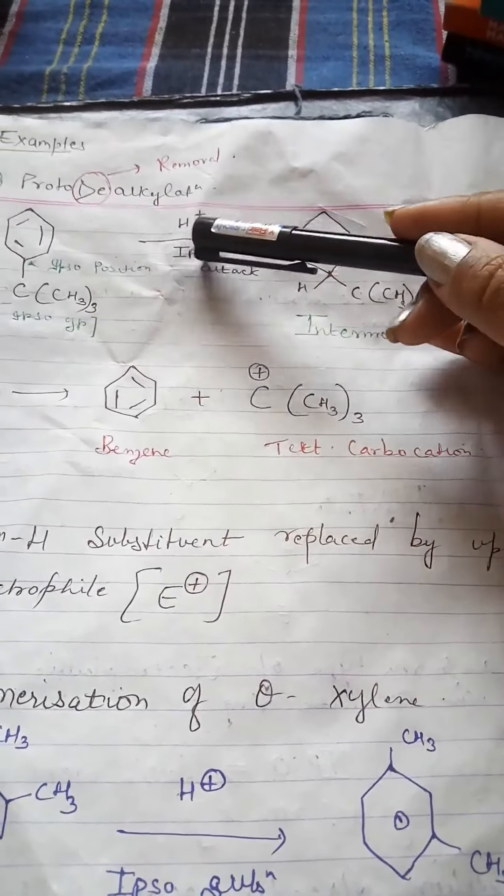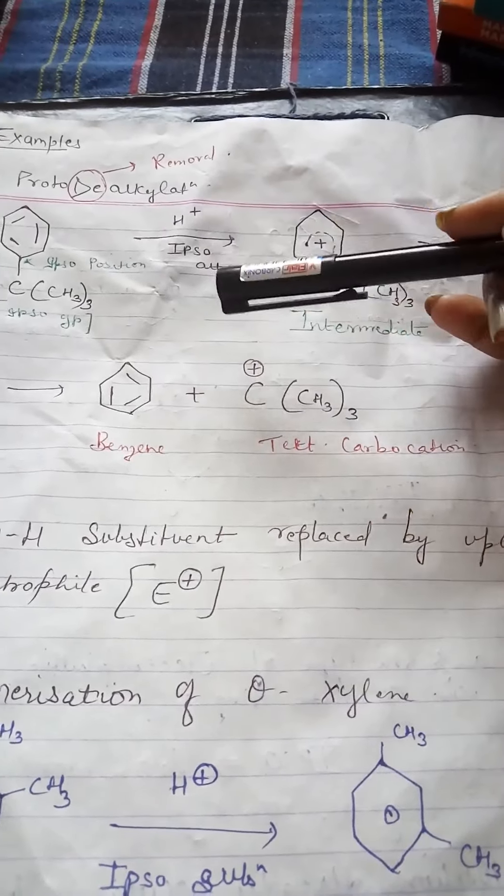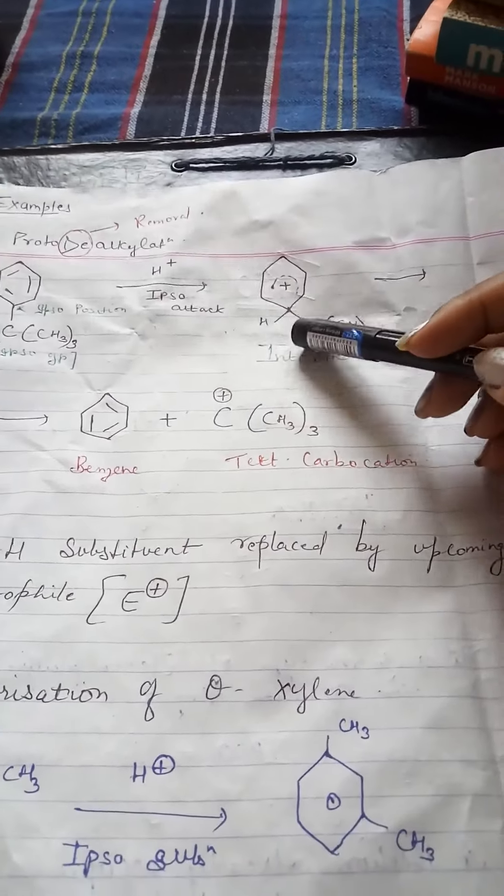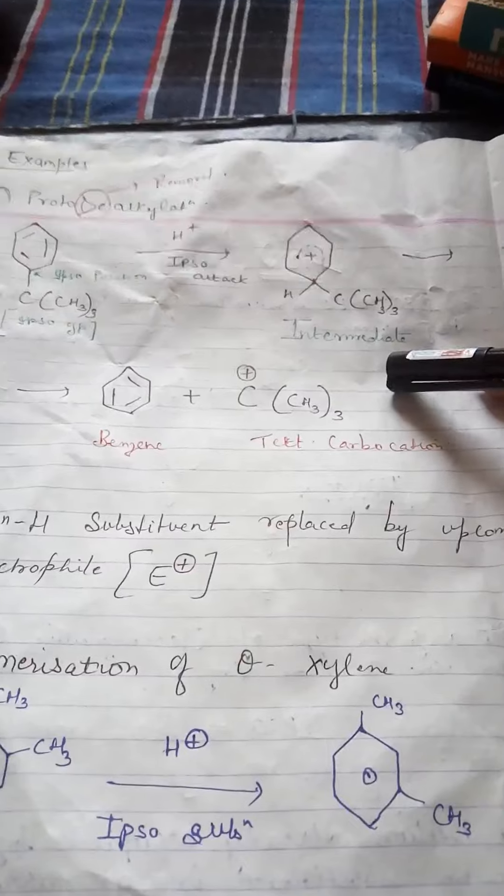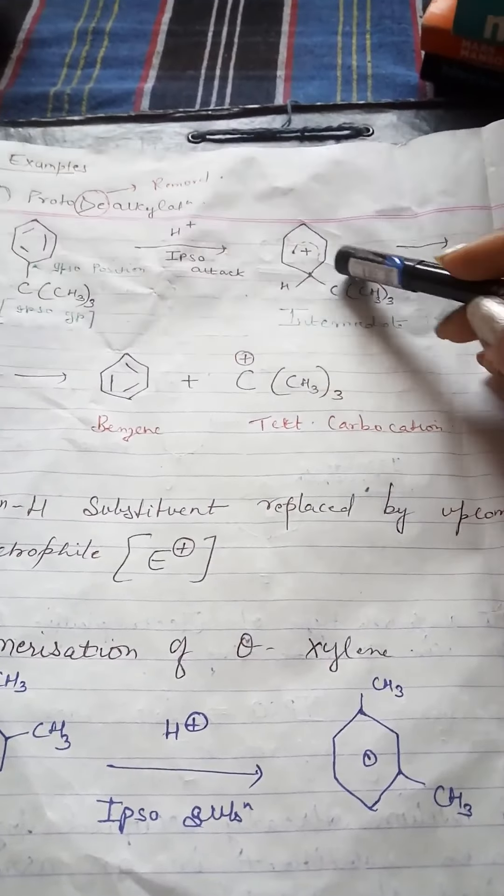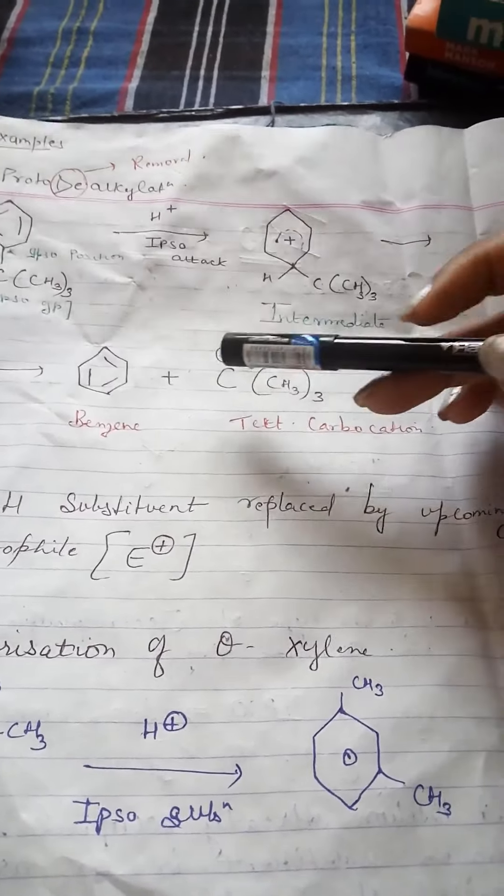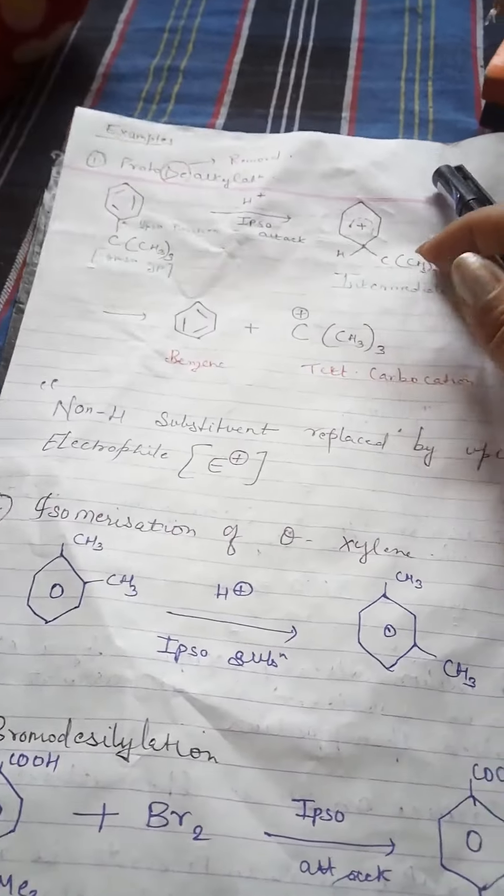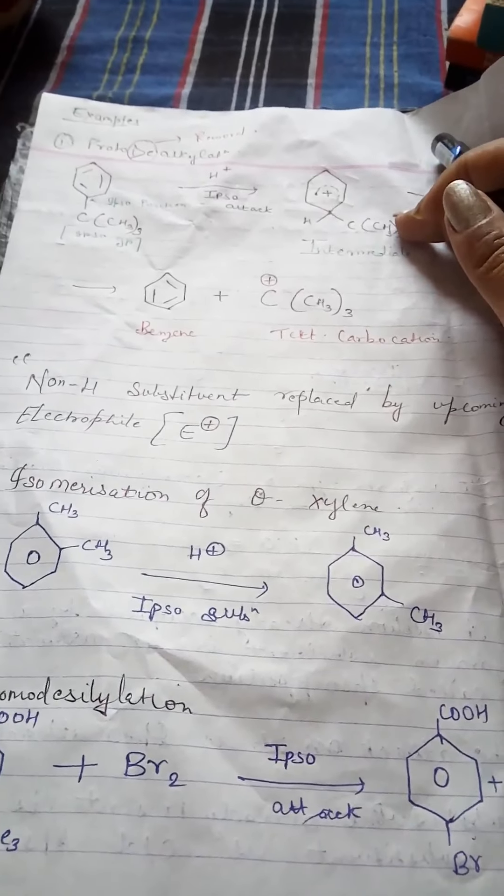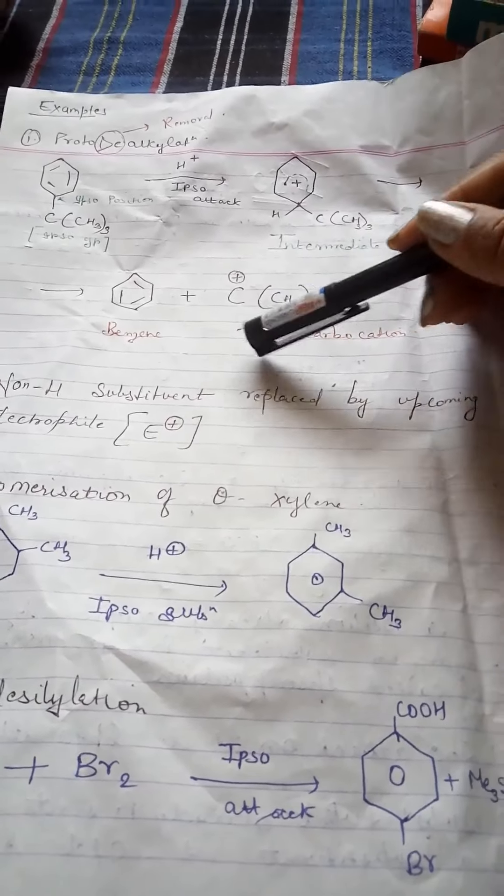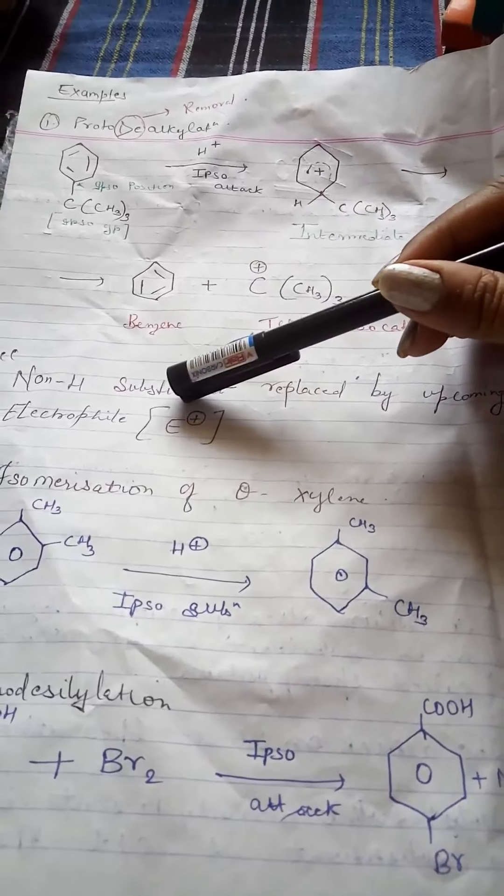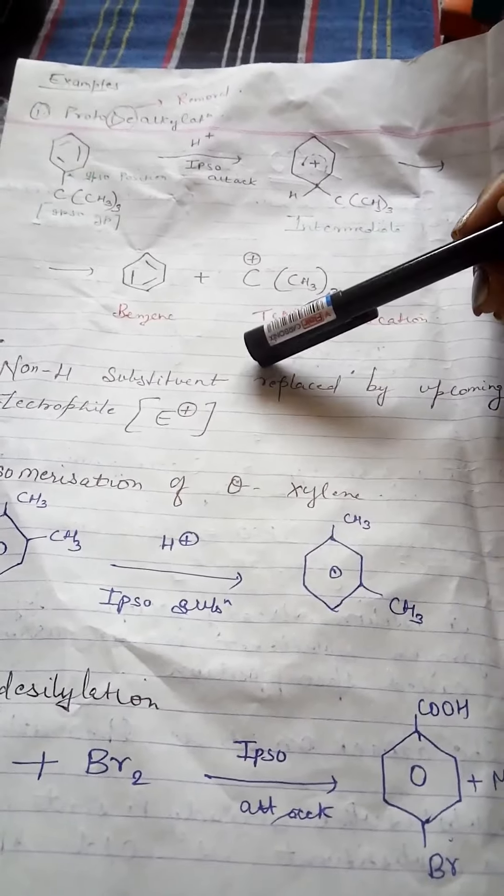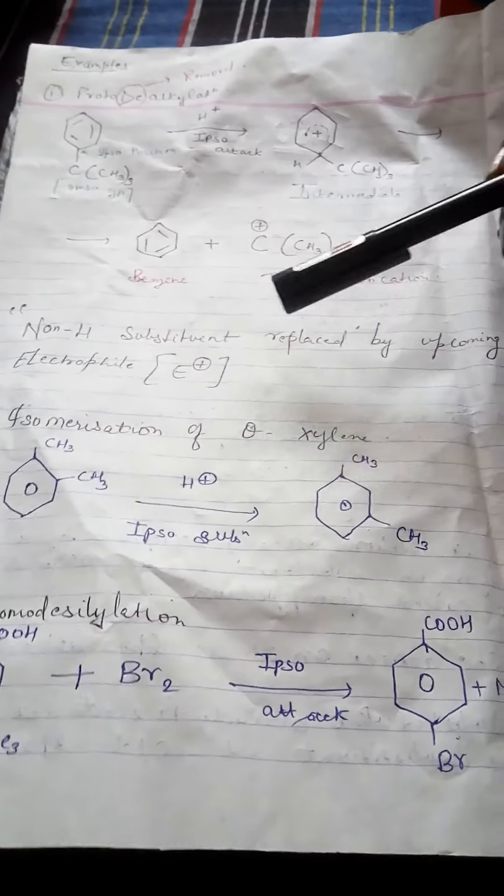Proto means addition of proton. De-alkylation means removal of alkyl group. So when ipso attack happens, your hydrogen will attach. This is your intermediate form. Electrophilic substitution is occurring. Benzene ring will form. Plus tertiary carbocation will be removed. So basically it can be said that non-hydrogen substituent replaced by upcoming electrophile.